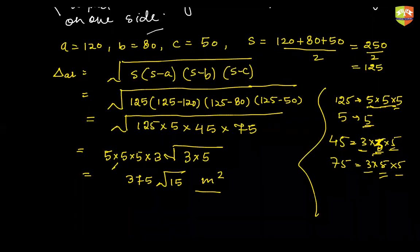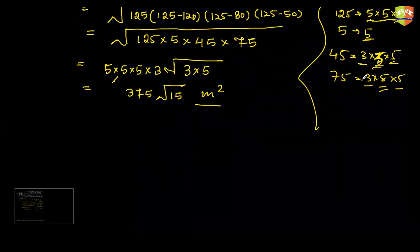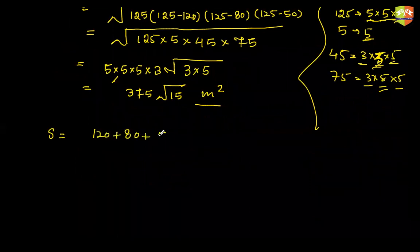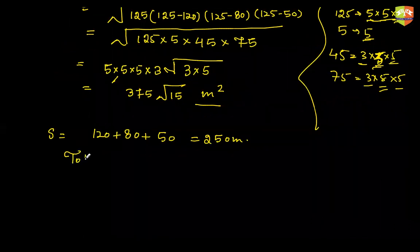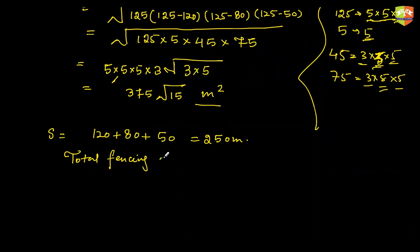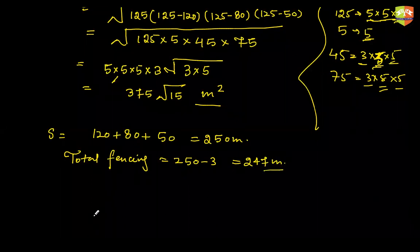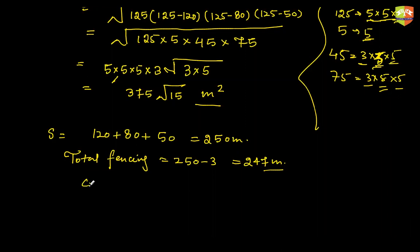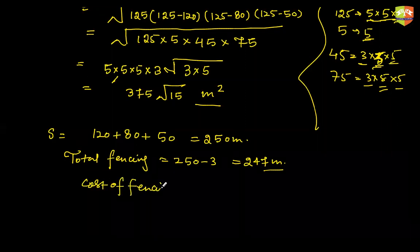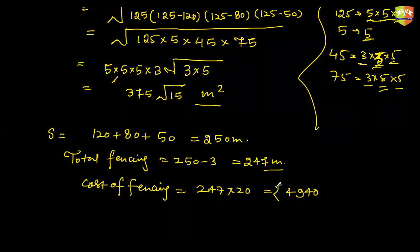Now let me solve the second part. Fencing is done on the perimeter. The perimeter is 120 + 80 + 50 = 250. Out of 250 meters, 3 meters are left out for the gate. So total fencing is done on 250 − 3 = 247 meters, and 20 rupees per meter is needed. So cost of fencing = 247 × 20 = 4940 rupees.